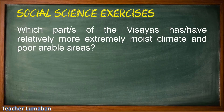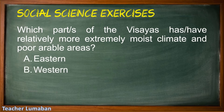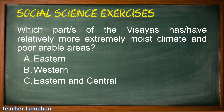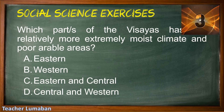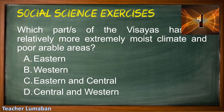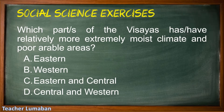Which part or parts of the Visayas has or have relatively more extremely moist climate and poor arable areas? Letter A: Eastern. Letter B: Western. Letter C: Eastern and Central. Letter D: Central and Western. Please choose the suitable answer in five seconds. Five, four, three, two, one. The correct answer is Letter A: Eastern.